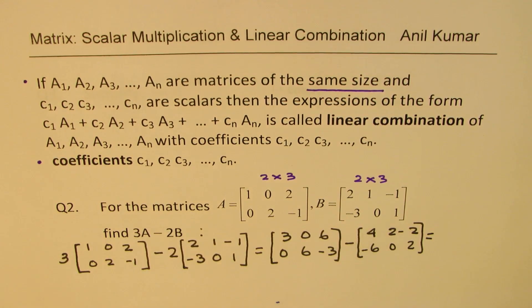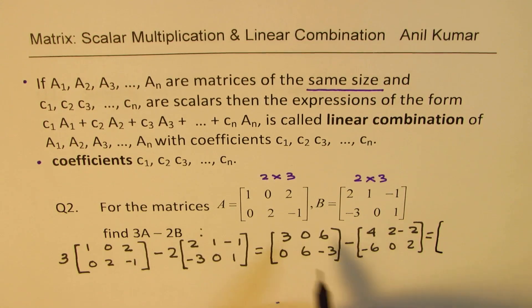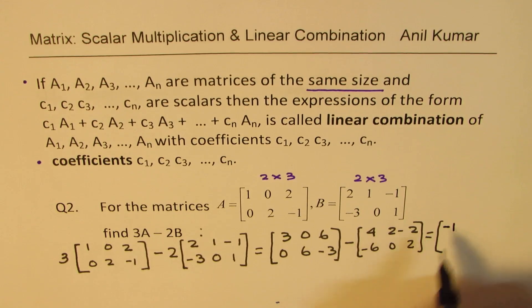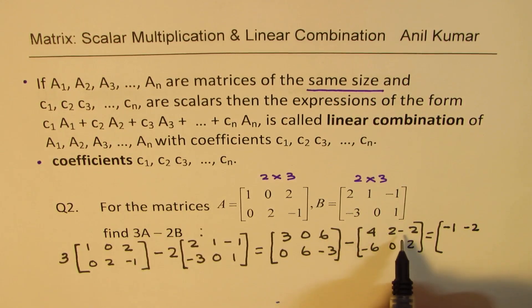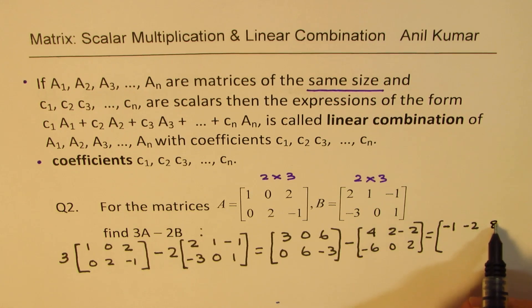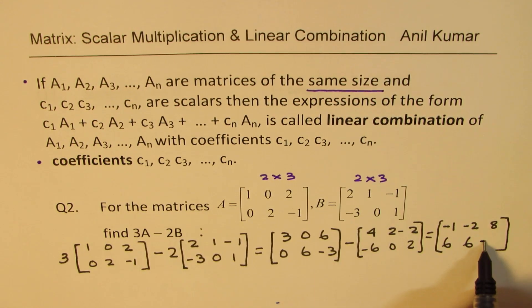Now we are supposed to subtract each corresponding elements. So we basically do three minus four, we get minus one. Zero minus two gives us minus two. Six minus minus two gives us eight. Zero minus six gives us six, wait, zero minus minus six gives us six. Six minus zero gives us six and minus three minus two gives us minus five.